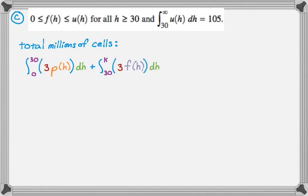They've been doing that recently where they make you switch functions partway through the interval. You should definitely be on the lookout for that when you're practicing for the AP exam. This is going to be the value that we got previously for the integral from zero to 30 of three P of H dH. So 1675 plus, we're just going to leave this from 30 to K of three F of H dH. Okay, but that's not all.